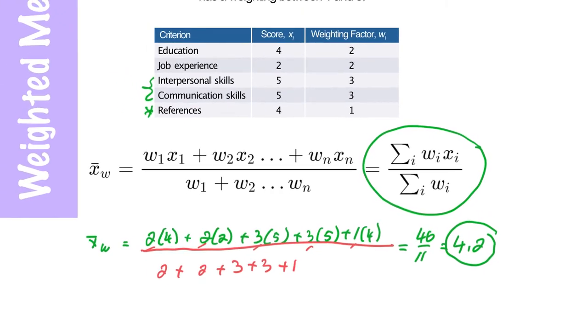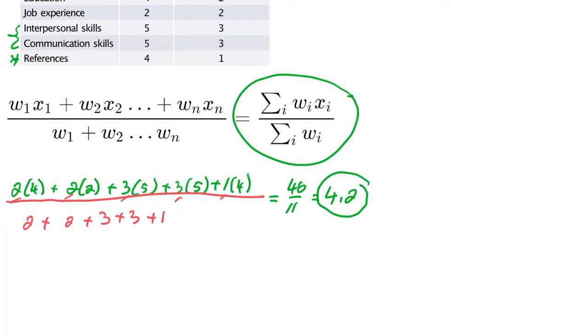So just so you know, if you took the weight factors out, the regular average would simply be 4. So in this particular case, the weight factor only had a slight bump in the score.